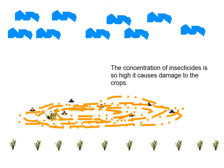High concentrations may harm other useful insects such as pollinators. It can also harm humans by getting into the food chain. These insecticides may persist in our bodies.